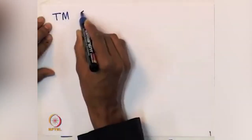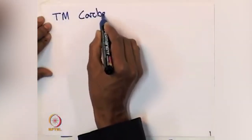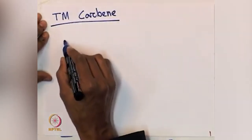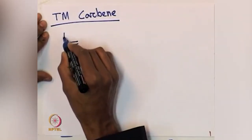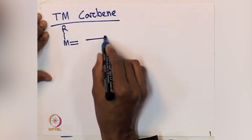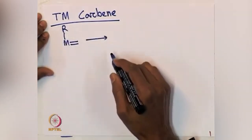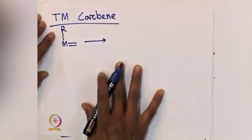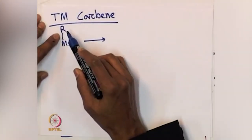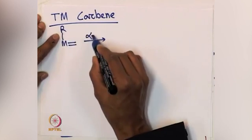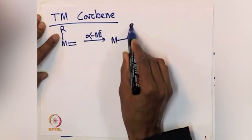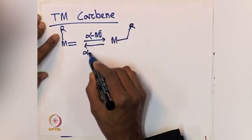Transition metal carbene, as we were trying to discuss, these are complexes where an R group is present on the carbene. This is the metal carbene species and the R group can be hydrogen or any other alkyl group. This is alpha migratory insertion we are looking at; the reverse will be the alpha elimination process.